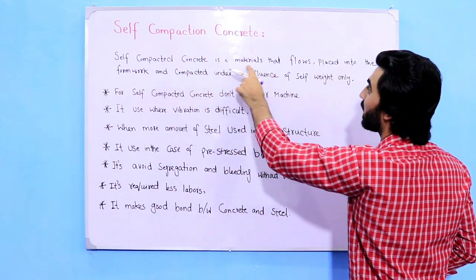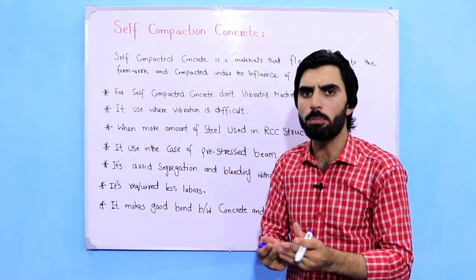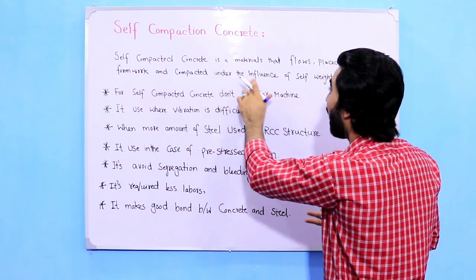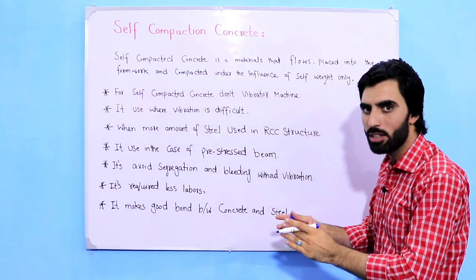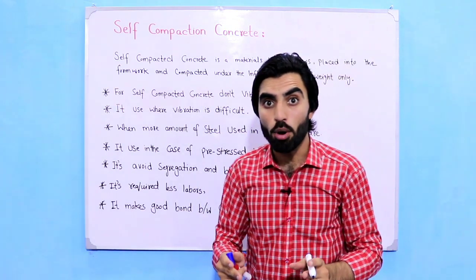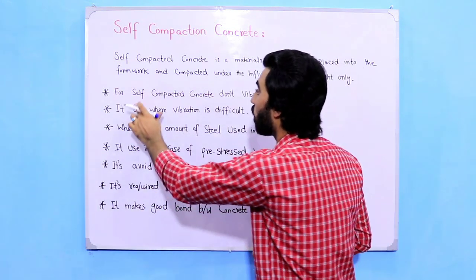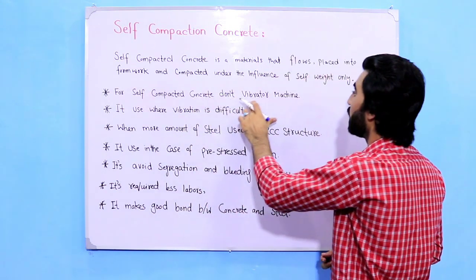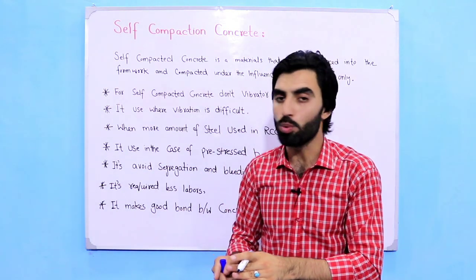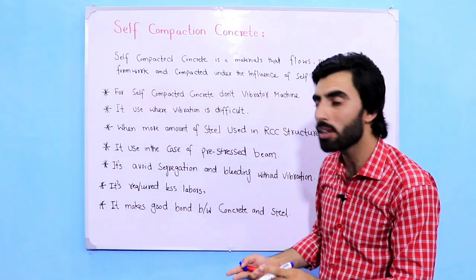We don't need any vibrating machine to compact the concrete. Self-compacted concrete flows and is placed into the formwork — whether for a beam, slab, or any RCC structure — and it becomes compacted under the influence of its own weight only. We don't need a vibration machine. This is the first importance in building construction: for self-compacted concrete, no vibrator machine is required.